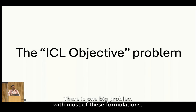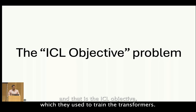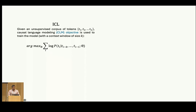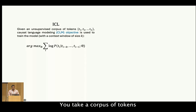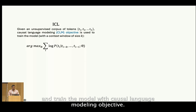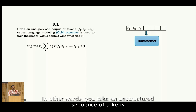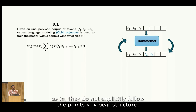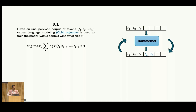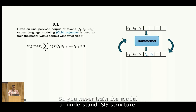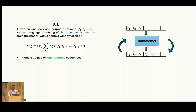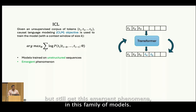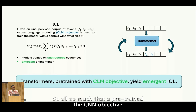There is one big problem with most of these formulations, and that is the ICL objective which they use to train their transformers. ICL as we understand it emerges in models trained with the causal language modeling objective. In other words, you take an unstructured sequence of tokens and train the model to predict the next token — unstructured meaning they do not explicitly follow the X-Y pair structure that you get from ICL queries. So you never train the model to understand the ICL structure, but still get this emergent phenomenon in this family of models. Transformers pretrained with the CLM objective yield emergent ICL.